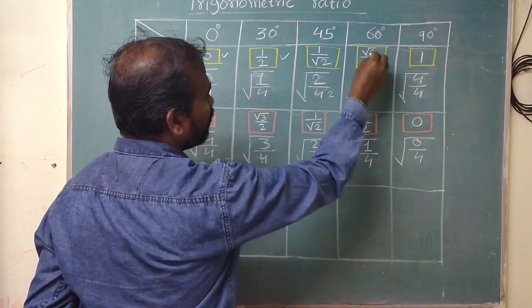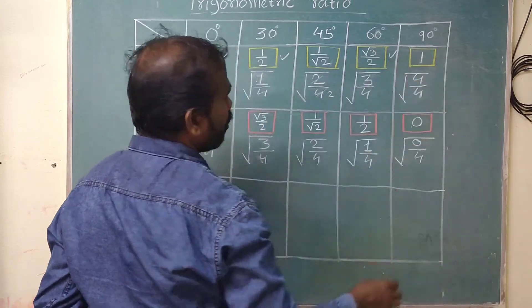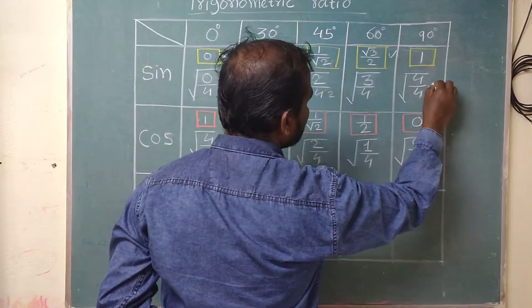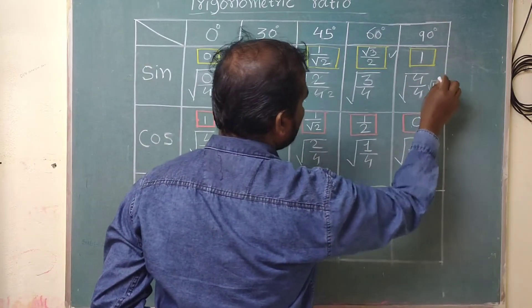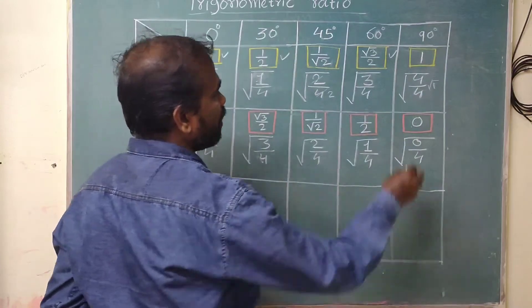So the value is √3/2. And root of 4/4 = root of 1, which is 1. So our sine values are: sin 0° = 0, sin 30° = 1/2, sin 45° = 1/√2, sin 60° = √3/2, sin 90° = 1.